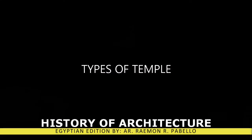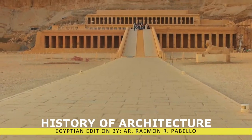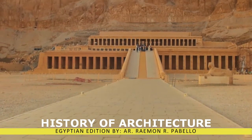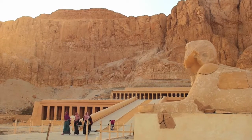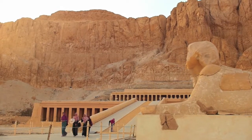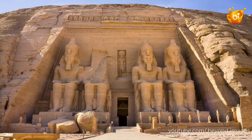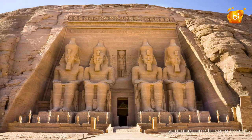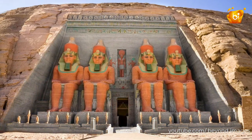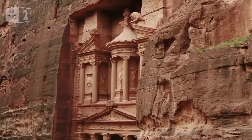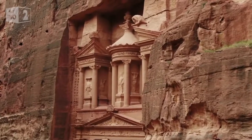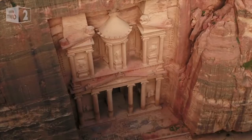Types of temples: 1. Mortuary — a place for worshipping dead pharaohs. 2. Cult — a place for the worshipping of an Egyptian deity. 3. Rock cut — a burial chamber for a nobleman.